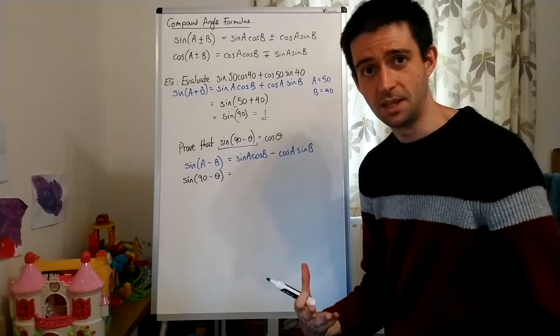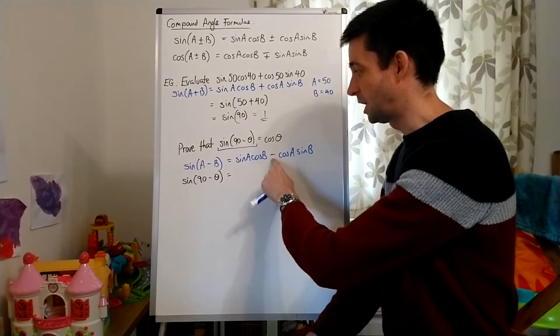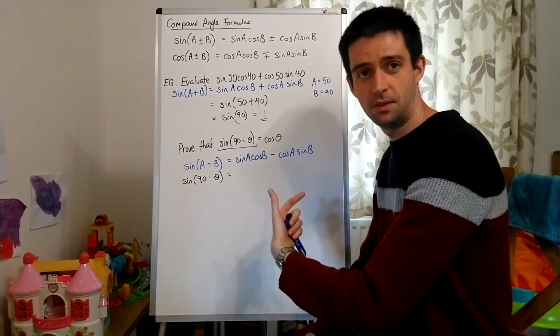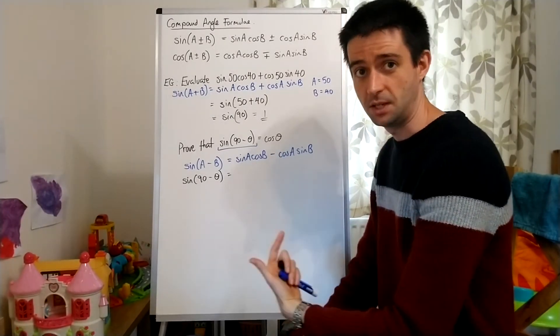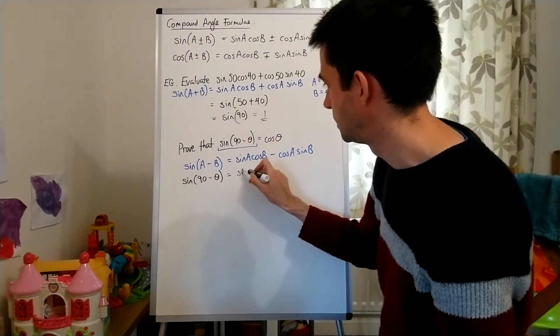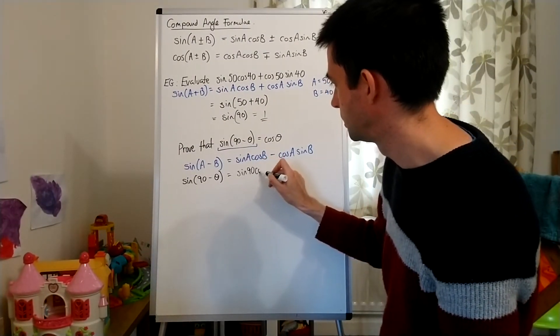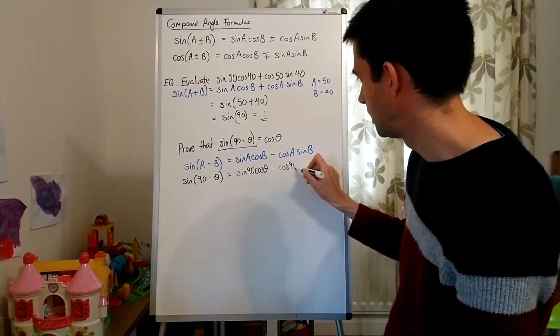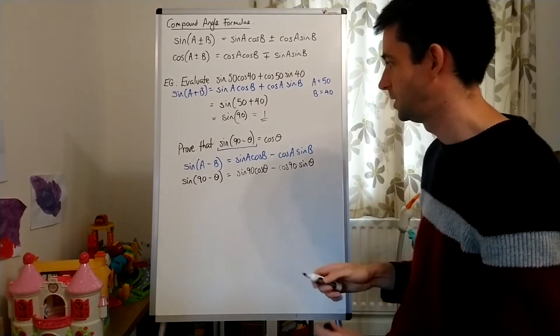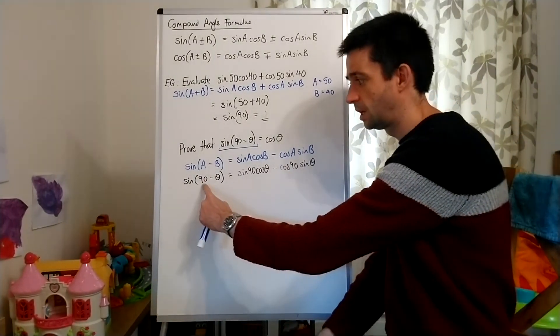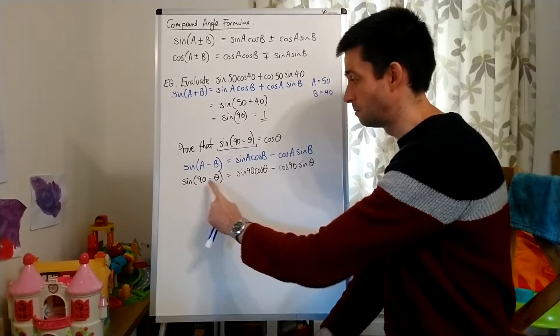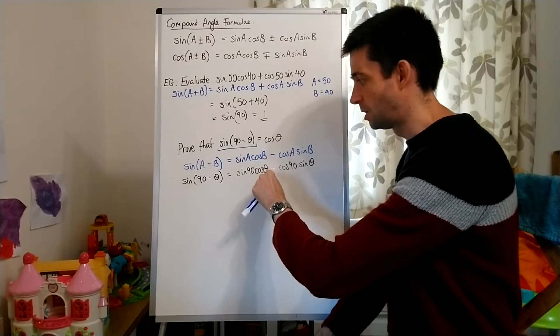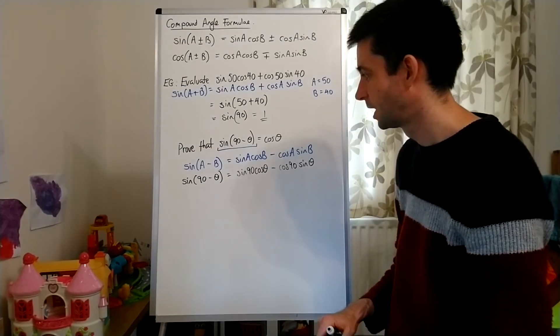Now, I don't write negative theta. It's a difference, and that is dealt with by the sign between the terms here. I don't need to put negative theta in for B. B is just theta. So what that's going to look like is sine 90 cos theta minus cos 90 sine theta. So what you'll see is, wherever I see an A in my identity, I write 90. And wherever I see a B in my identity, I write theta.